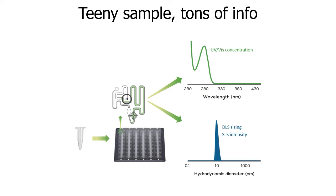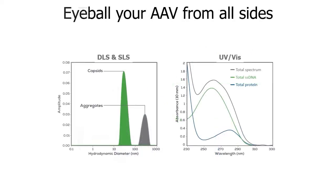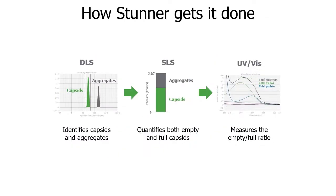With two microliters, UV-Vis is used for concentration, while DLS provides sizing and aggregation detection, and SLS — static light scattering — quantifies the amount of light coming from your sample. DLS identifies which peak is your capsid (typically around 25 nanometers) versus aggregates. SLS distinguishes how much of the signal comes from true capsids versus aggregate components, giving you more reliable measurements. UV-Vis then determines the nucleic acid component and total protein, from which you derive the empty-to-full ratio.